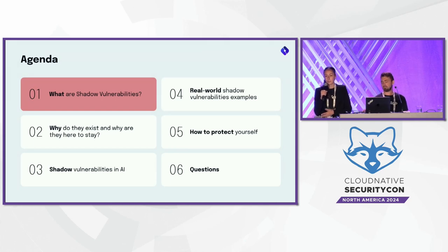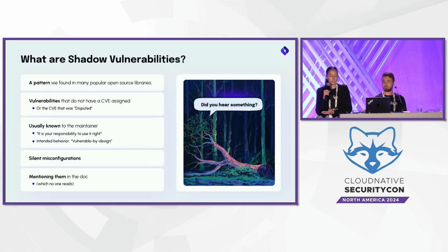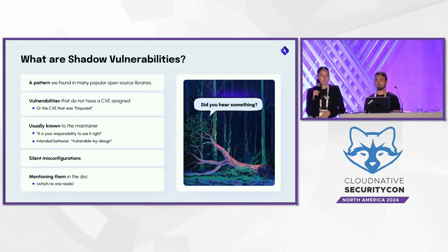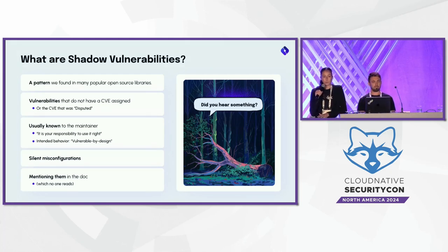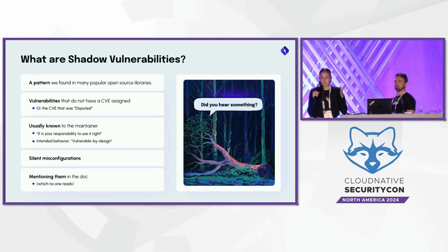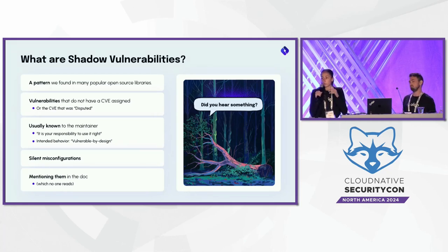We will start with what shadow vulnerabilities are and why they exist. Shadow vulnerabilities is a pattern we found in many popular open-source libraries. These are vulnerabilities that just don't have a CVE assigned, or their CVE is disputed. Just like the metaphor of a tree falling in the forest — someone does know about them. Those are the maintainers of the library, who are usually aware of these security pitfalls. They just mark them as a no-fix and pass the responsibility to the library's users, saying it's your responsibility to use it right. This makes the libraries vulnerable by design.